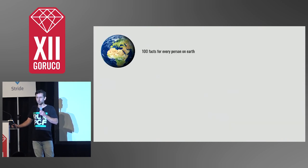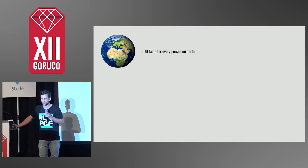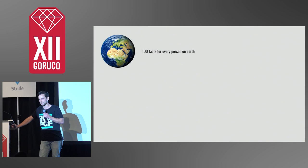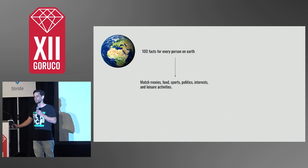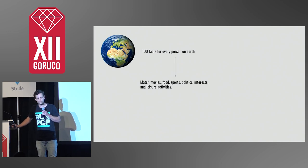Let's take an example to highlight these core criteria. Suppose we have a dataset with 100 facts for every person on earth. How interesting would you find this information? If I printed this out for you, how much of it would you read? Now suppose we pass this information to a function that ranks compatibility across all the fields.